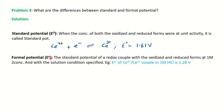Formal potential is also represented by E⁰, but it is the standard potential for a redox couple with oxidized and reduced forms at one molar concentration under specified solution conditions. For example, for the same Ce⁴⁺/Ce³⁺ couple in 1 M HCl, the formal potential is 1.28 V — less than the standard potential of 1.61 V. This is because in the presence of acid the metal forms a complex, reducing the free concentration of the species, and therefore the electrode potential is lower.